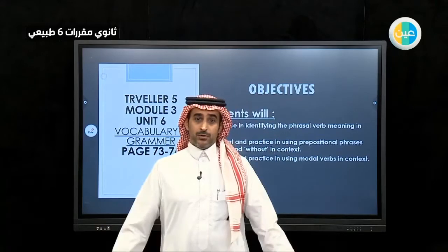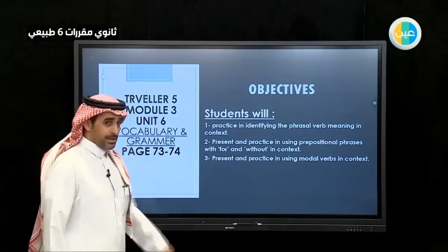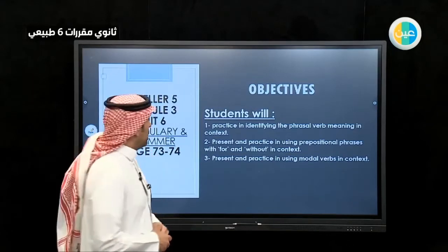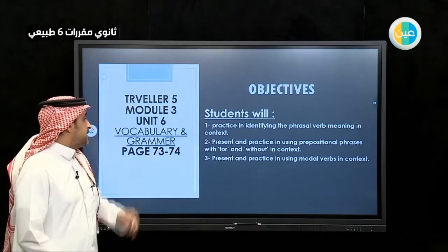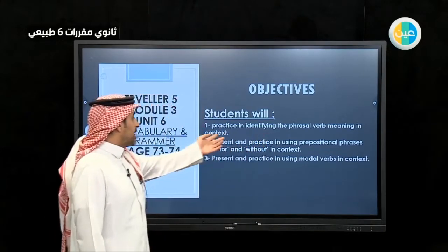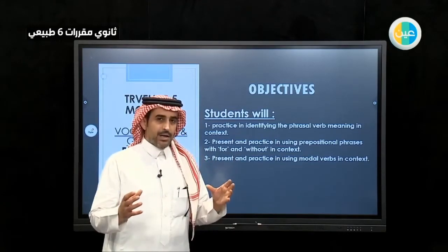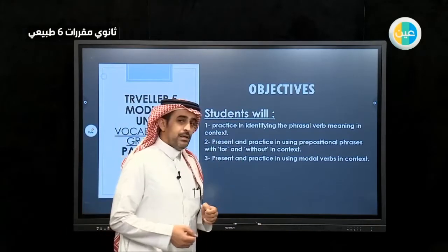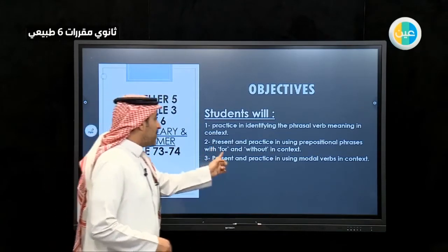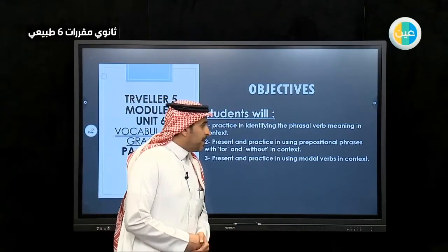As-salamu alaykum wa rahmatullahi wa barakatuh. Today we are going to complete our lesson in Unit 6, Vocabulary and Grammar. We talked about the phrasal verbs and modal verbs and other things. It's on pages 73 and 74. We will practice identifying phrasal verb meaning from the context during reading. We will also practice using prepositional phrases with 'for' and 'without', and modal verbs in context.